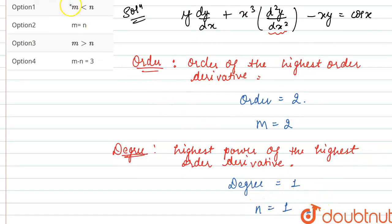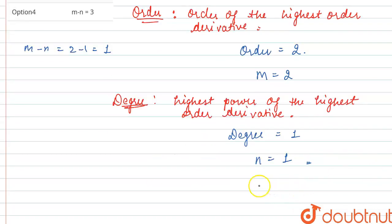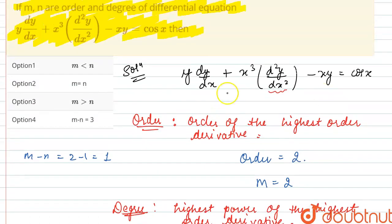Now we will choose the option. n is greater than m — this is wrong. m equals n — this is also wrong. m minus n equals 3: m minus n is 2 minus 1, which equals 1, so this is also wrong. Option number 3 is m is greater than n. We can clearly see that m is greater than n because 2 is greater than 1, so option number 3 will be the correct option.